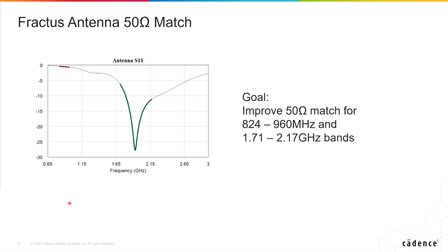Moving on to the example problem we're going to show: it is an antenna from Fractus, an antenna manufacturer popular in the IoT space. We've got the raw antenna performance shown here — basically the return loss, and more specifically the magnitude of S11. We're trying to match for two bands: the low band at 824 to 960 MHz, and the high band at 1.71 to 2.17 GHz. We can see for the high band we're already fairly well matched; the low band, not at all. So we're going to come up with a single matching network that improves the low band performance and trades off some of the high band, while obviously not trading off too much performance at the high band.